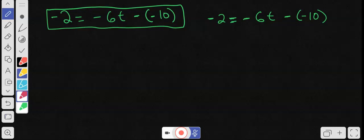Without further delay, let us begin. We have the problem here: negative 2 is equal to negative 6t minus parentheses negative 10. What a mouthful, right? But let's take it step at a time. We're looking for t, we don't know what t is, that's the unknown.